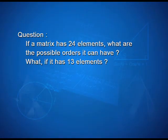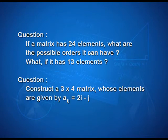Now, there is an assignment for you. Question number 1: If a matrix has 24 elements, what are the possible orders it can have? What if it has 13 elements? Question number 2: Construct a 3 by 4 matrix whose elements are given by Aij = 2i - j.